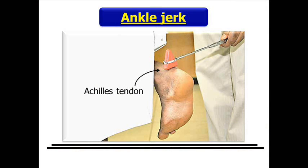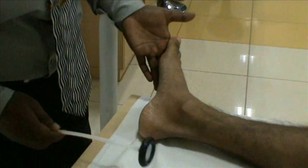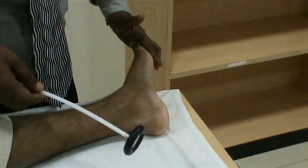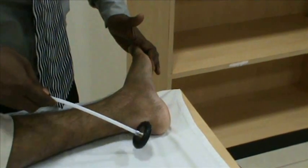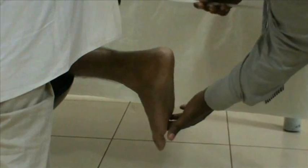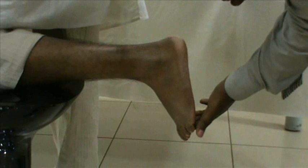To elicit ankle jerk, with one hand dorsiflex the foot of the subject so that the Achilles tendon is stretched. With the other hand, strike the Achilles tendon. Observe for any contraction of calf muscles and plantar flexion of the foot.